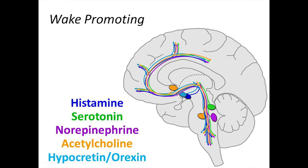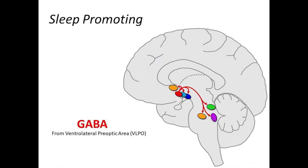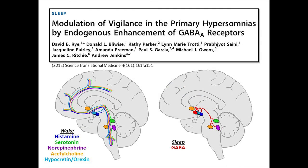Let's briefly review the neurotransmitter systems regulating wake and sleep. There are five different neurotransmitter systems that all act to promote wakefulness via diffuse projection throughout the brain: histamine, serotonin, norepinephrine, acetylcholine, and hypocretin or orexin. GABA, however, is the only neurotransmitter system that promotes sleep, and does this by inhibiting the activity of all of the wake-promoting neurotransmitters. Research by Dr. David Rye and colleagues at Emory University identified an endogenous molecule in the cerebral spinal fluid of patients with hypersomnia that increases the inhibitory activity of GABA-A receptors.